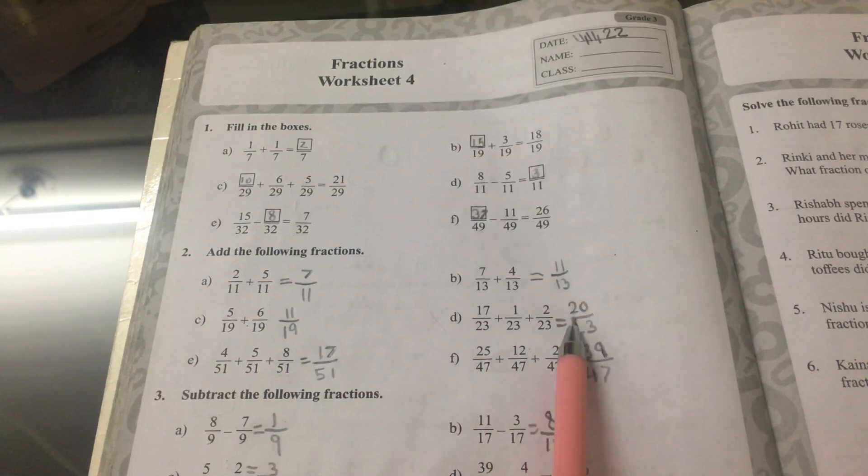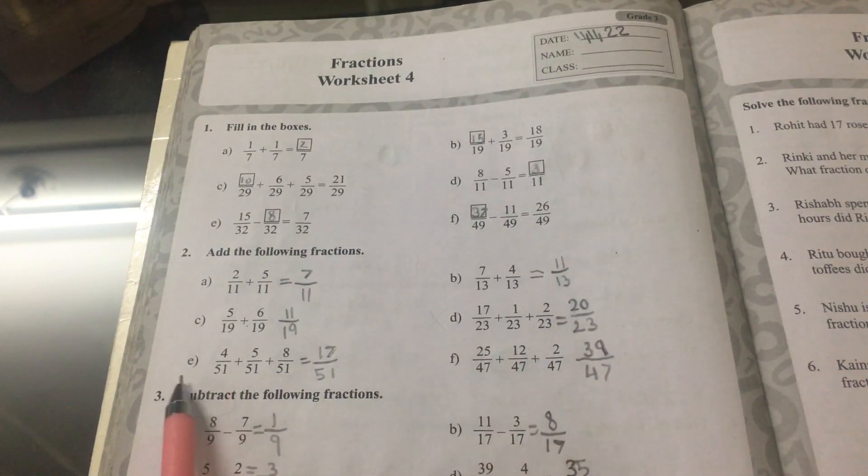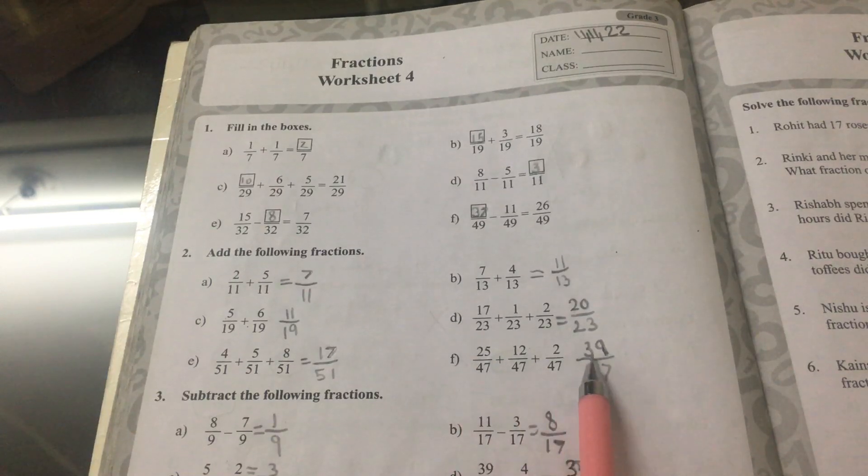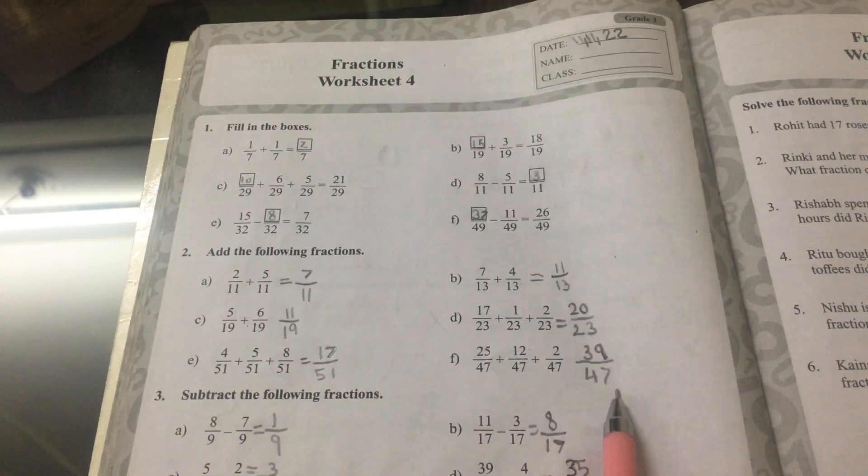C is equal to 11 nineteenths. D is equal to 20 twenty-thirds. E is equal to 17 fifty-firsts, and F is equal to 39 forty-sevenths.